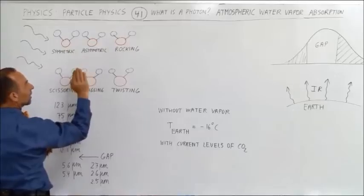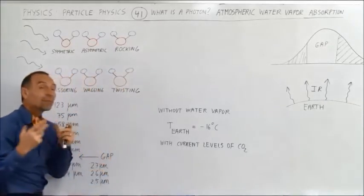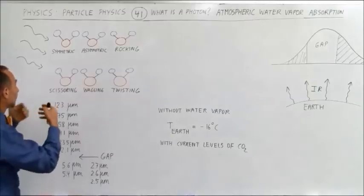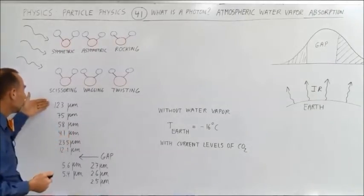Wagging, the water molecule can vibrate like this, and twisting meaning the water molecule can vibrate like this. And the combination of all those various ways in which the water molecule can vibrate allows it to absorb photons of all these various wavelengths.